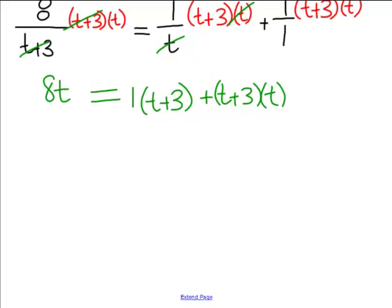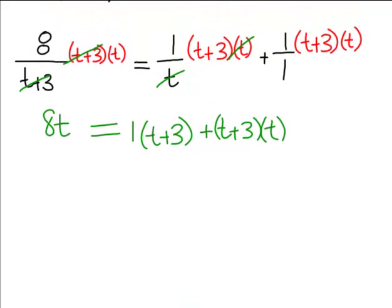So now we're on the verge of simplifying. We went from fractions, all this black stuff up here, to just plain old numbers. These we can solve. So 8T I'm just going to leave for right now. And let's simplify this side. This one doesn't really need to be distributed. It's really T plus 3. But this T needs to be distributed. So we end up with T squared plus 3T.